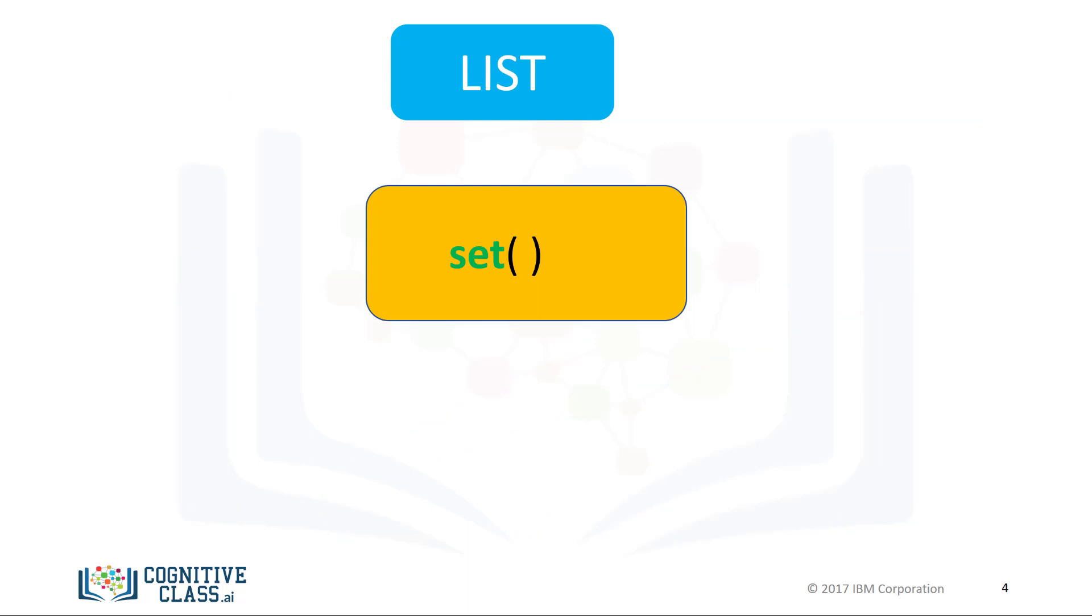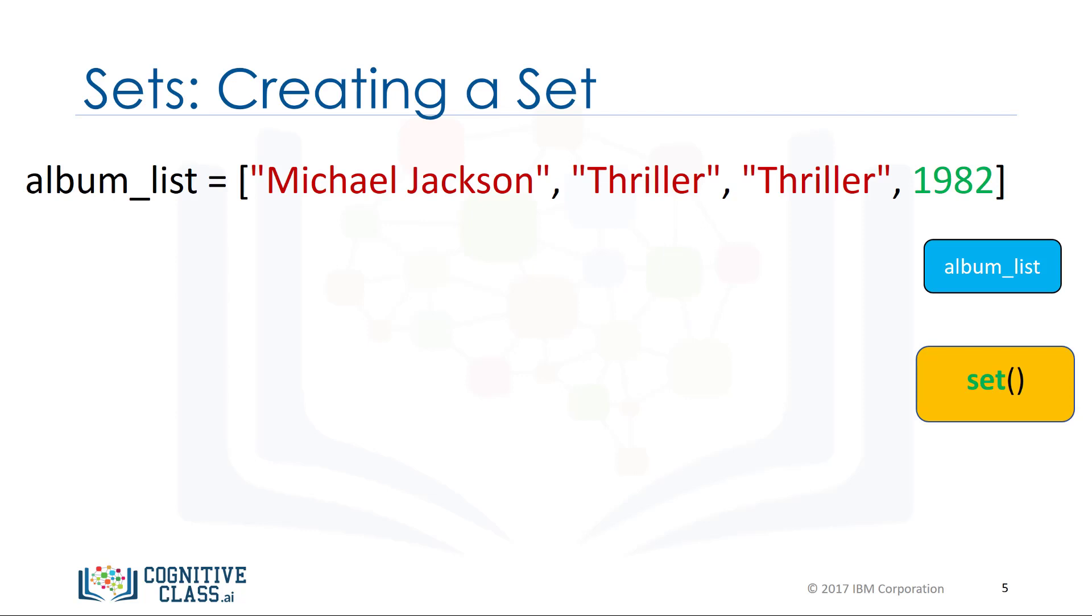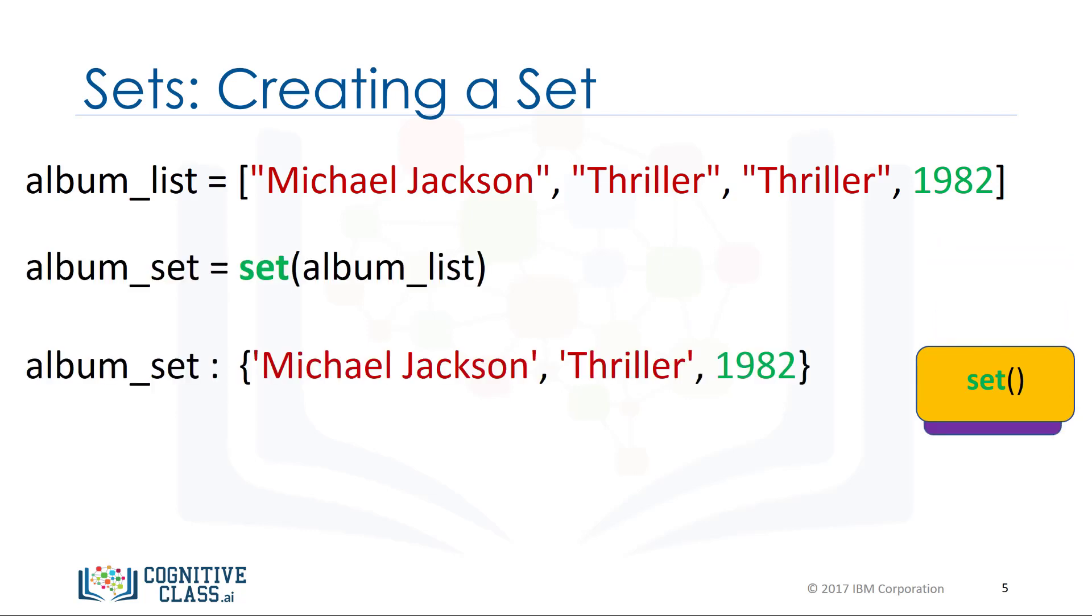You can convert a list to a set by using the function set. This is called typecasting. You simply use the list as the input to the function set. The result will be a list converted to a set. Let's go over an example. We start off with a list. We input the list to the function set. The function set returns a set. Notice how there are no duplicate elements.